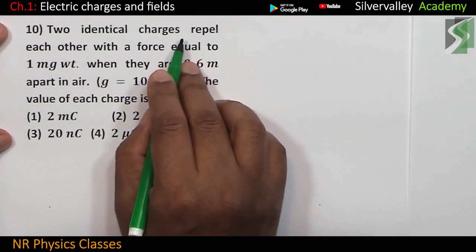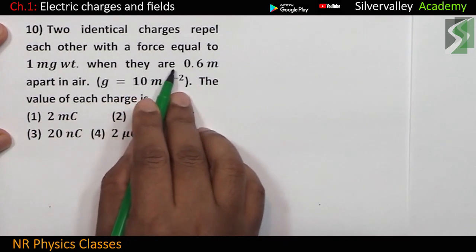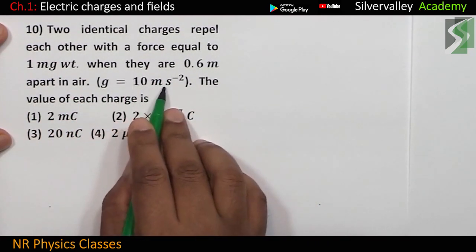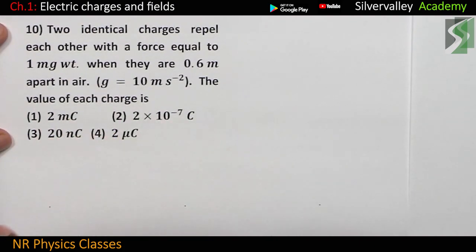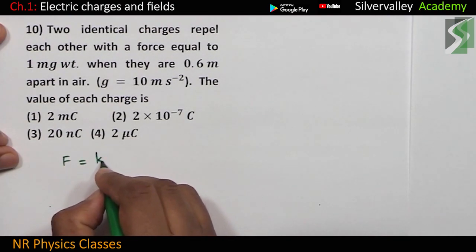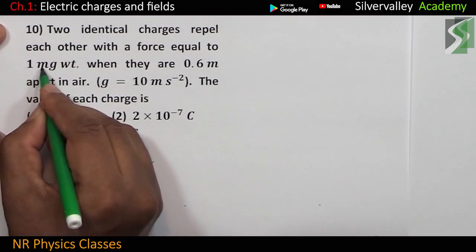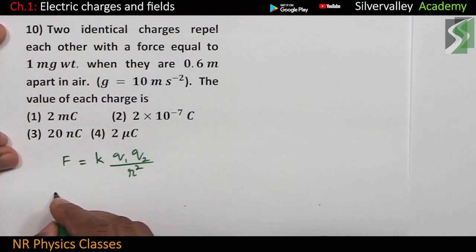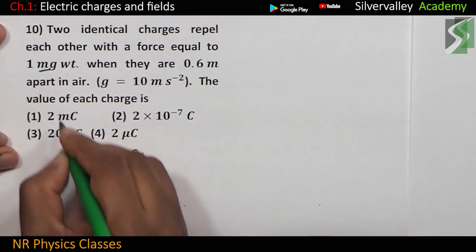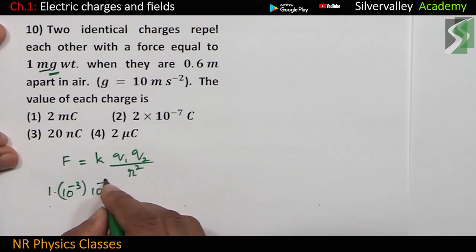Two identical charges repel each other with a force equal to 1 milligram weight when they are 0.6 meter apart in air. G is given. The value of each charge is fine. So, force equal to constant Q1 Q2 by R square, okay. Force is 1 milligram weight. 1 is 1. Milli is 10 to the power minus 3. Gram to kg, another 10 to the power minus 3. Kg weight to Newton into 10. Acceleration due to gravity.